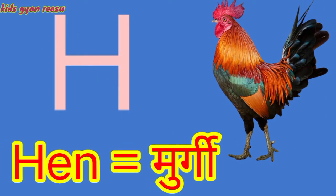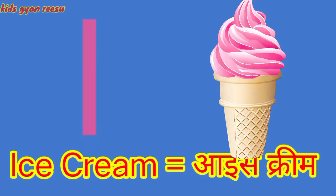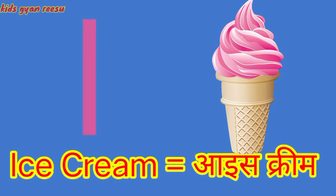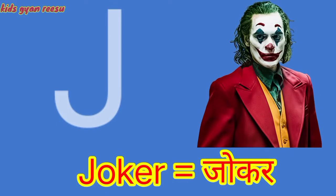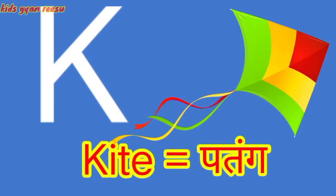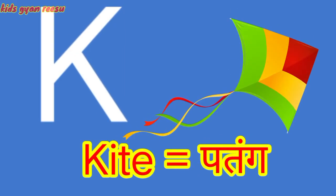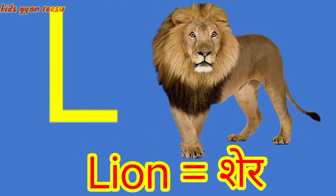I for ice cream, J for joker, J for cat, L for lion.